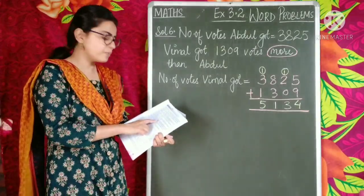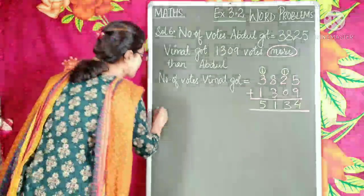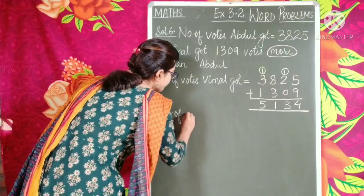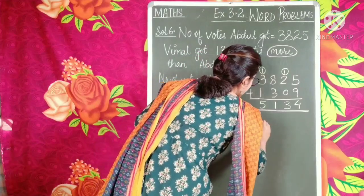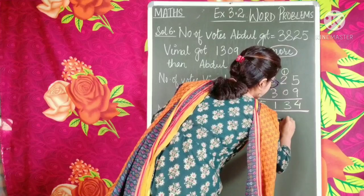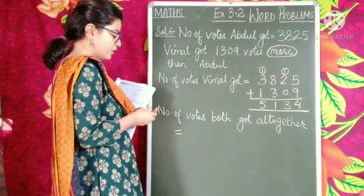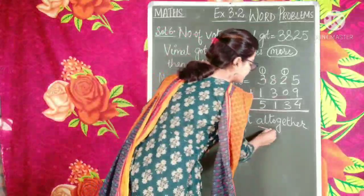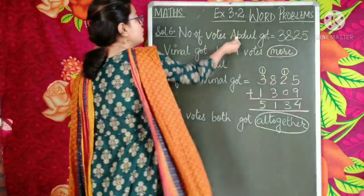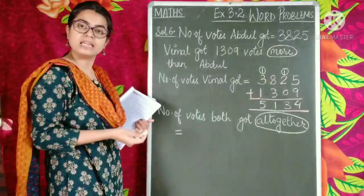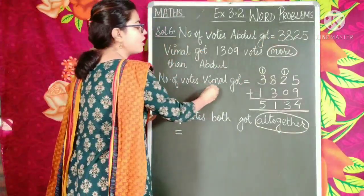Now, what is the second part of the question? How many votes did both of them get altogether? Number of votes both got altogether — here also we look for another keyword. The keyword is 'altogether'. Altogether means sab mila ke — that means Abdul aur Vimal ke votes mila kar dono ko kitne votes mile. What do we have to do? We have to add Abdul's votes to that of Vimal's votes.